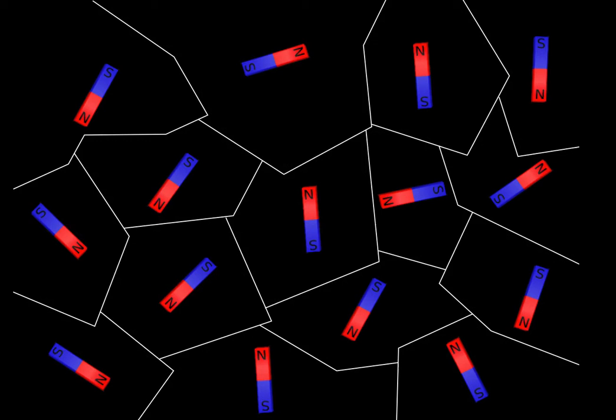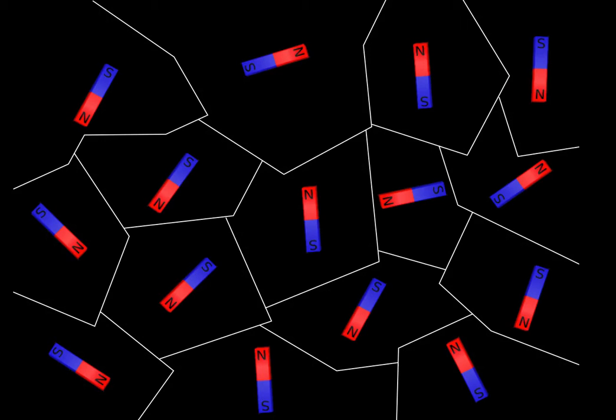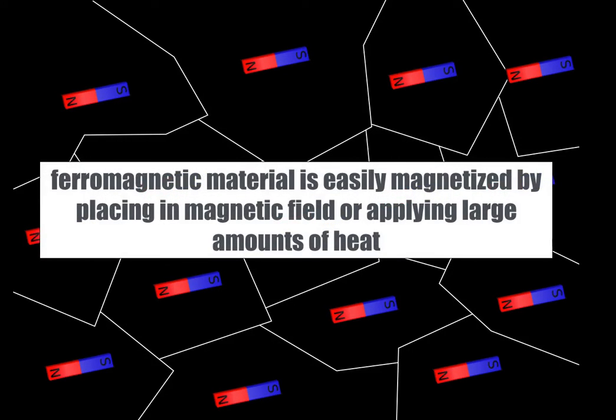That paperclip basically became a temporary magnet — it went from having randomly aligned domains to having aligned domains. But when I detached the paperclip from the magnet, the domains went back to random and it lost its magnetic properties. That's what we call a temporary magnet.